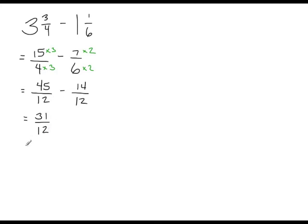Before we finish, let's change this improper fraction back to a mixed fraction. How many times does 12 go into 31 evenly? It only goes in twice, so 2 becomes our whole number. We have a remainder of 7 because 12 times 2 is 24, and between 24 and 31 we have a remainder of 7. The denominator does not change, so it's still 12, giving us 2 and 7 over 12. That's it for this video on adding and subtracting mixed fractions. As always, you can download the class notes from our class website. Thanks for watching, see you next time.